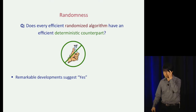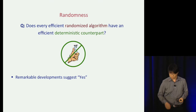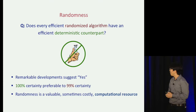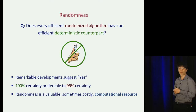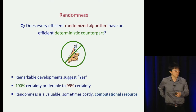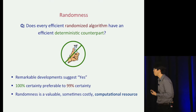We can all imagine circumstances where we prefer or even require the absolute certainty of a deterministic algorithm, rather than a high-probability guarantee of a randomized algorithm. And even if we were willing to tolerate a 1% failure probability, just like time, space, and memory, randomness is a computational resource — it's valuable, it can be costly, and we want to minimize its use in our algorithms.